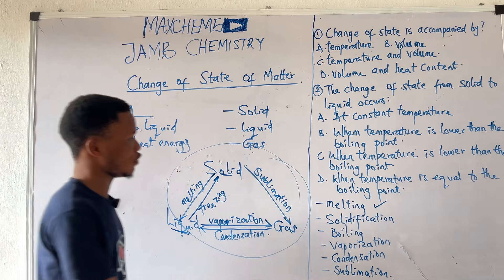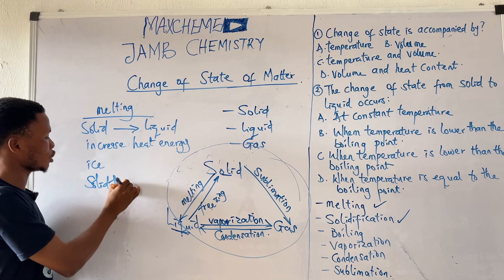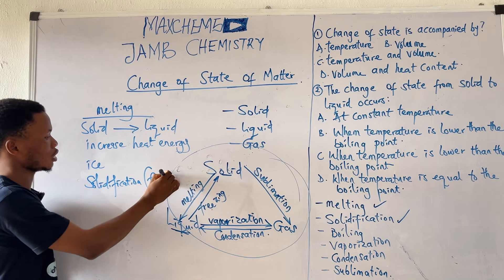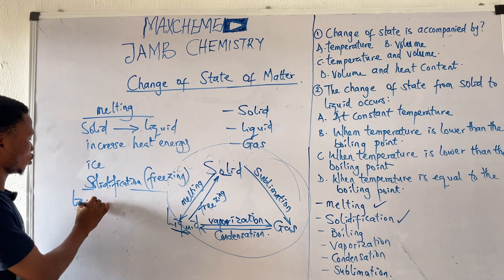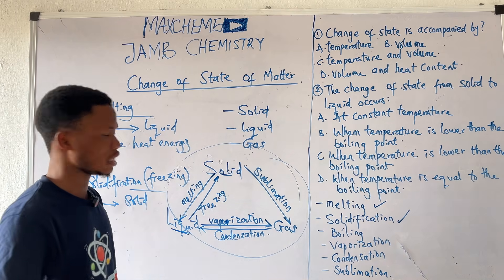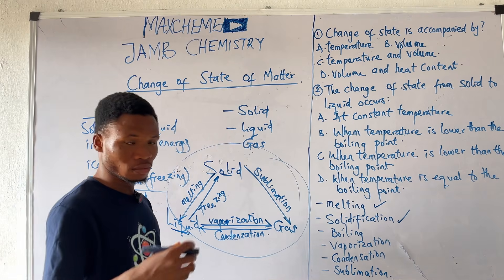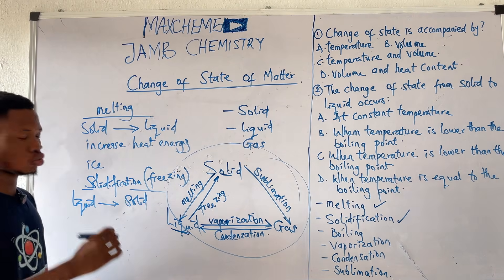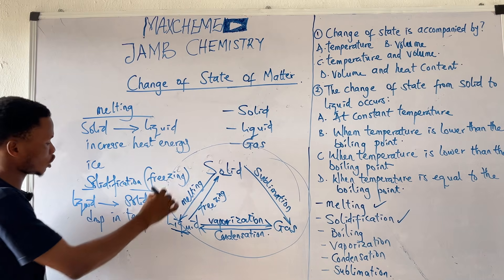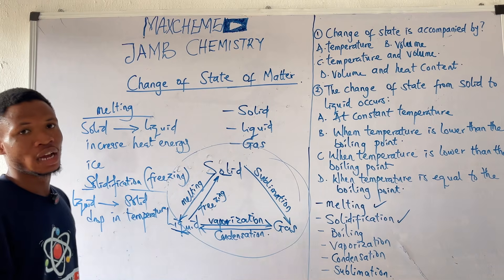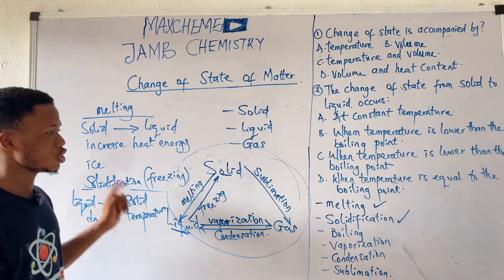Moving on to solidification. Solidification, also known as freezing, is a change of matter from liquid to solid. For example, you have your water, and this change is due to a drop in temperature. So when there is a drop in temperature, your substance will change from liquid to solid — that is why water will turn to ice. That is freezing, or solidification.